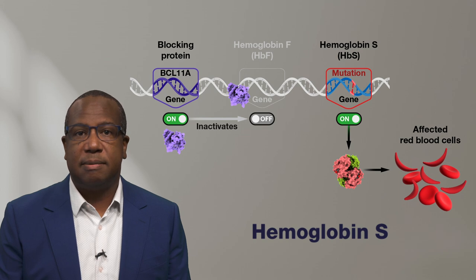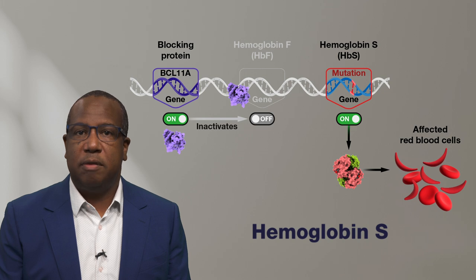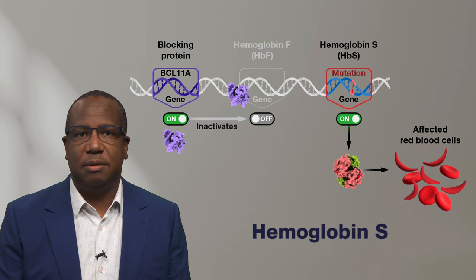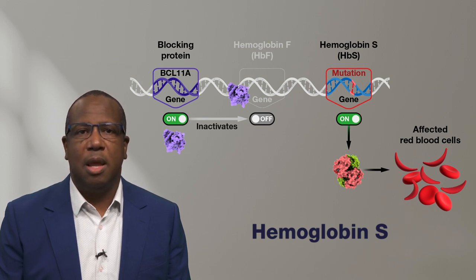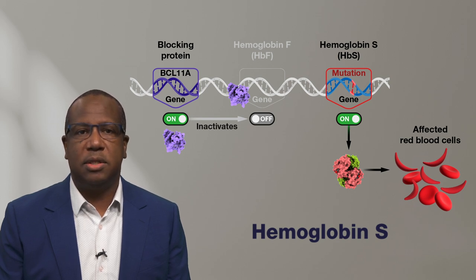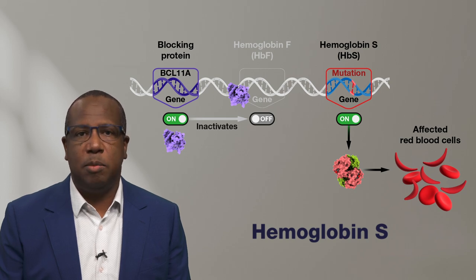Hemoglobin S is a sickled hemoglobin that is produced as a result of a genetic variant. Hemoglobin S still delivers oxygen but is not stable and can break apart easily. The presence of hemoglobin S causes red blood cells to form a crescent or banana-like sickle shape. Individuals with sickle cell disease have a genetic variant that causes their body to produce hemoglobin S instead of hemoglobin A.